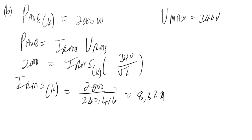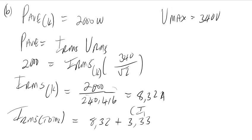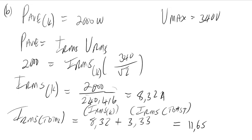Therefore, total I_rms equals I_rms kettle plus I_rms toaster: 8.32 plus 3.33. Add them together to get the total, which is 11.65 A. That's how you solve that question.